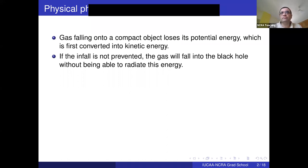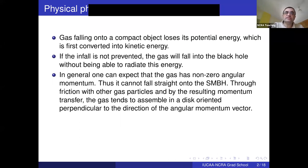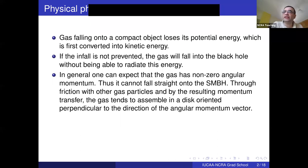It will increase the mass of the black hole but won't generate any radiation. Usually, what happens is that the gas does not fall directly into the black hole because the infalling gas tends to have non-zero angular momentum. Because of friction with other particles and the resulting transfer of momentum, the gas tends to assemble in the form of a disk oriented perpendicular to the direction of the angular momentum vector.